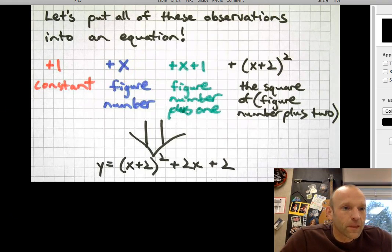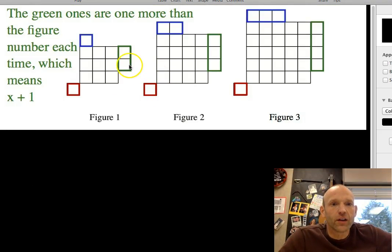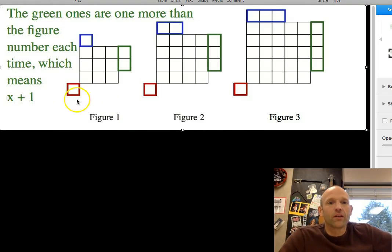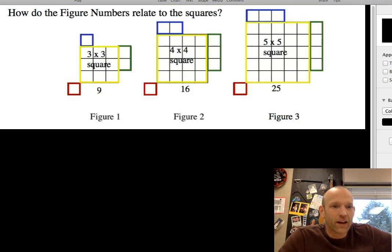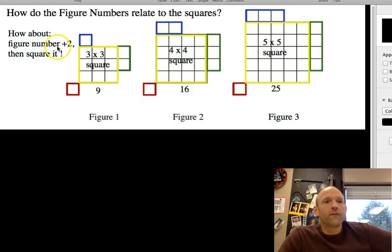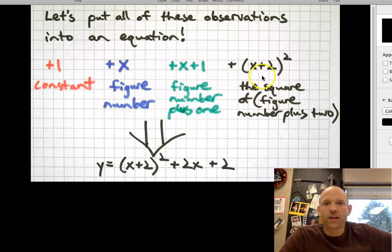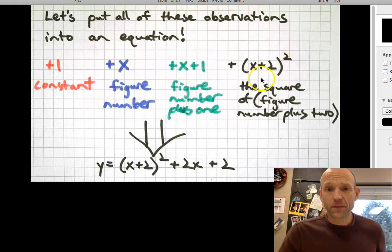Green. Where'd the green go? There it is. Green, we decided, was figure number plus one. Figure number plus one. So that's two, three, four. I go back to my equation here. There's my figure number plus one in green. And then finally, as we figured out the squares, figure number plus two, then square it. I put that in black here. Yellow doesn't show up that great on paper. Anyway, the square of the figure number plus two.